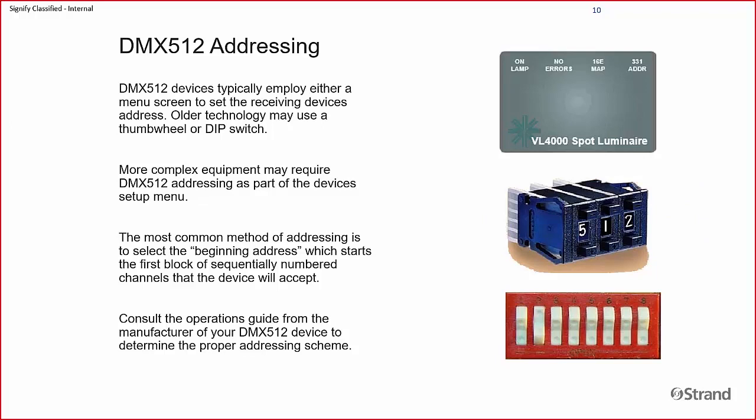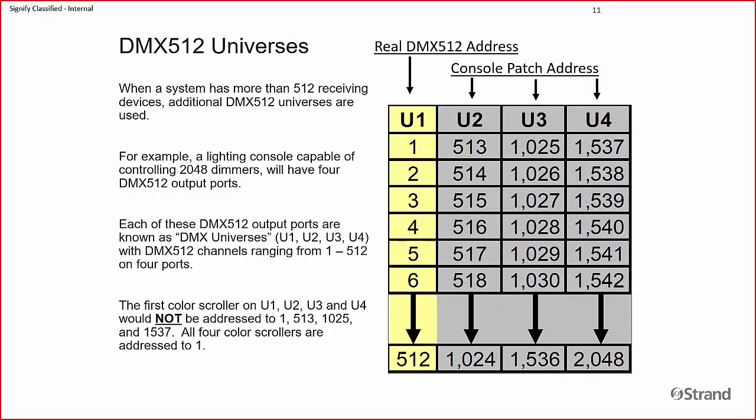Every device that communicates over DMX needs an address. Some devices may have thumb wheels, screens with buttons, or even dip switches. With LED tape being small and tiny, I'm seeing more and more dip switches as the interface for setting that DMX address. A DMX universe is a collection of 512 addresses. Your first universe has real DMX addresses 1 through 512; the second universe is 513 to 1024, and so on.